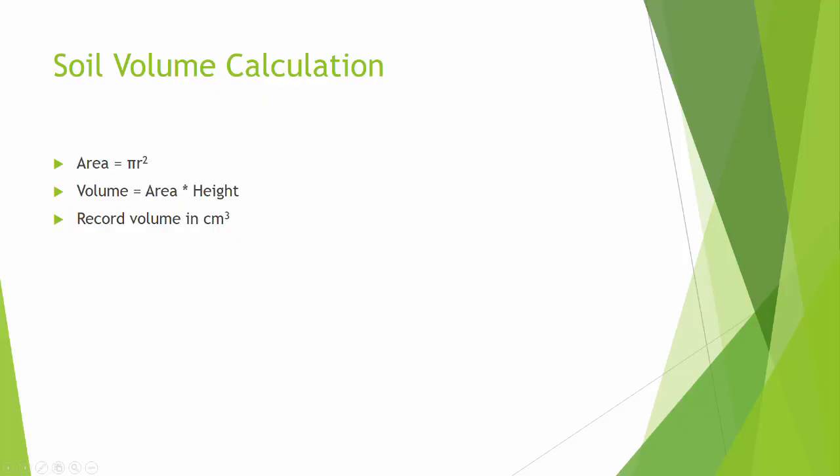Use pi r squared to find the cross-sectional area of the ring and multiply that value by the height of the ring to get the soil volume. Record this volume in centimeters cubed.